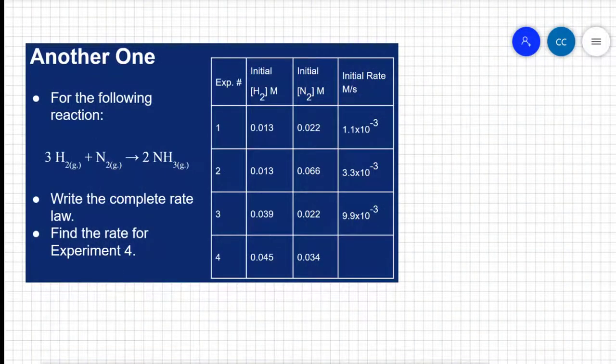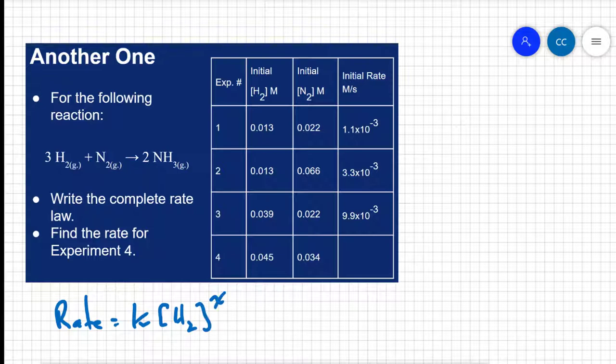As we did before, we'll start with the generic rate law. We'll say that rate equals k, the rate constant, times the concentration of the first reactant, which is hydrogen again, raised to some power, I don't know what the exponent is, and I'm going to multiply by the concentration of the second reactant raised to another exponent that I don't know.